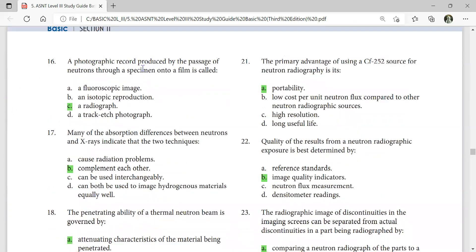A photographic record produced by passage of neutrons through a specimen onto a film is called a radiograph. The primary advantage of using Californium-252 source for neutron radiography is portability. The absorption differences between neutrons and x-rays indicate that the two techniques complement each other. Quality of results from a neutron radiographic exposure is best determined by image quality indicators.